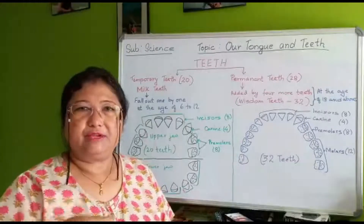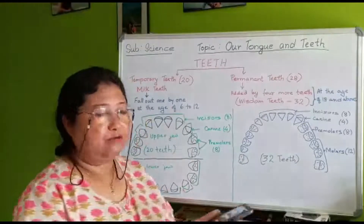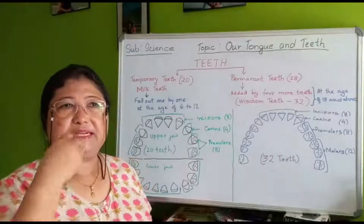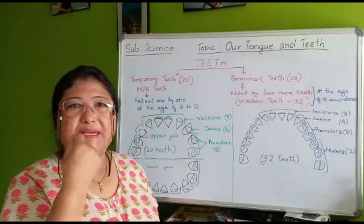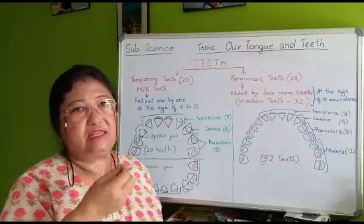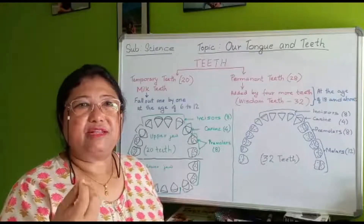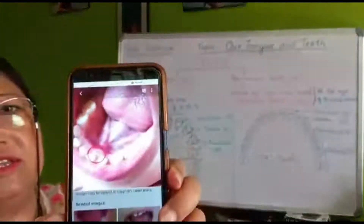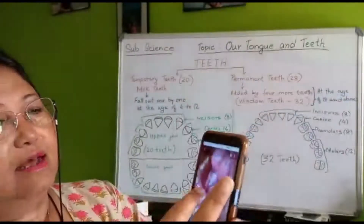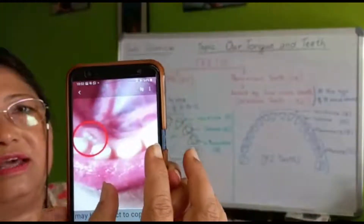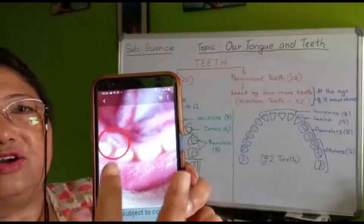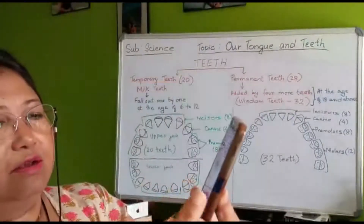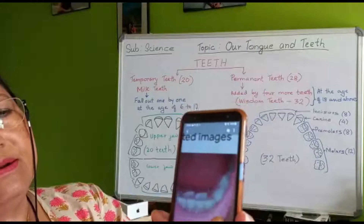Some children are scared to remove their milk teeth. But when a milk tooth has to come out and you don't remove it, what happens? See here — this is a milk tooth with a red circle. If you don't remove it, automatically when the time comes, a new tooth will push out from inside behind it. So you have to remove the teeth on time.